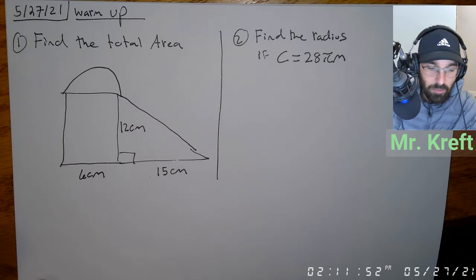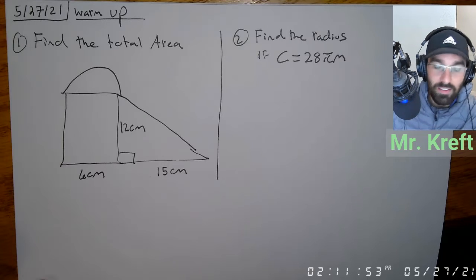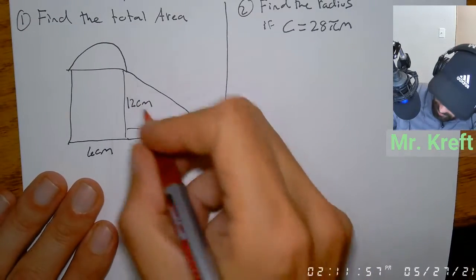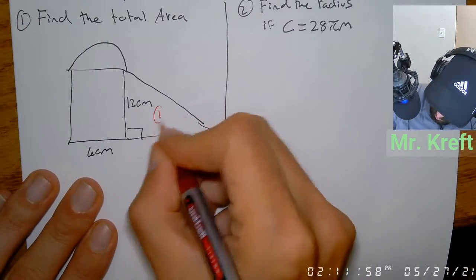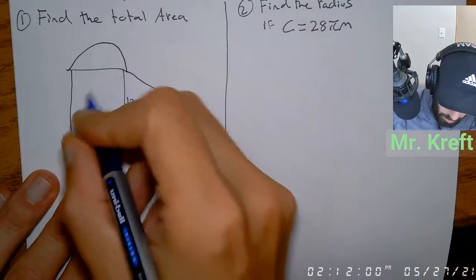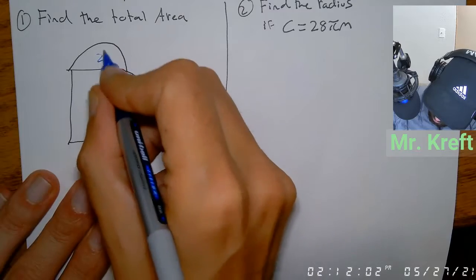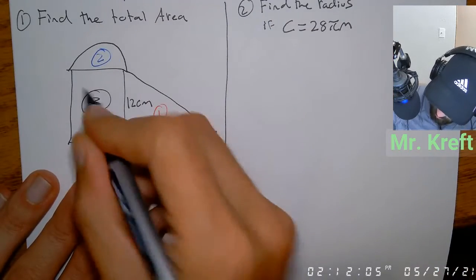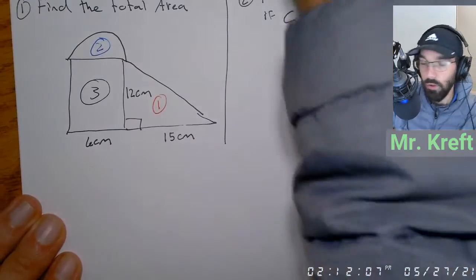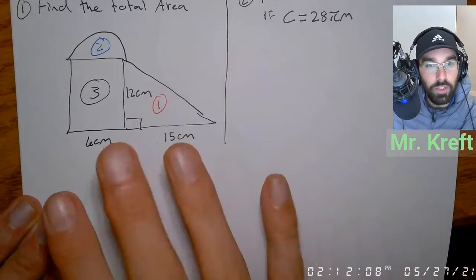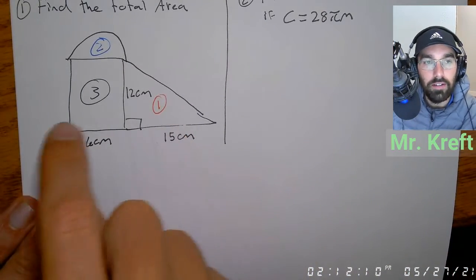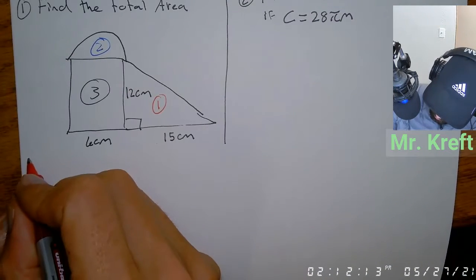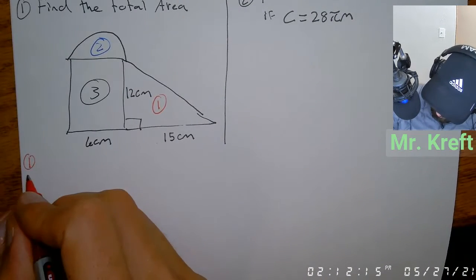All right, taking a look at this, the first thing I'm going to notice is that there are three shapes. I'm going to label them: shape one, shape two, and shape three. To find the total area, I'm going to find the area of each individual shape.